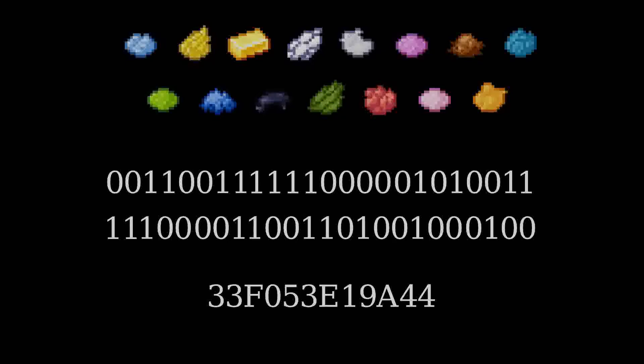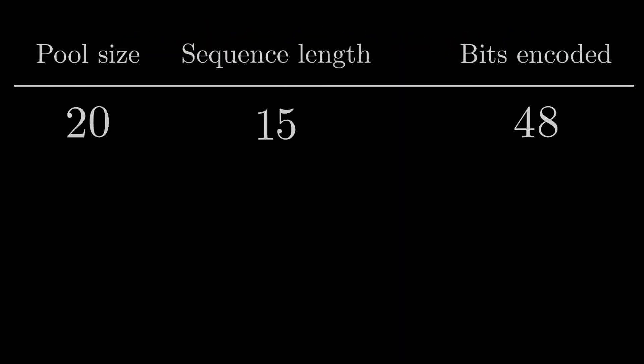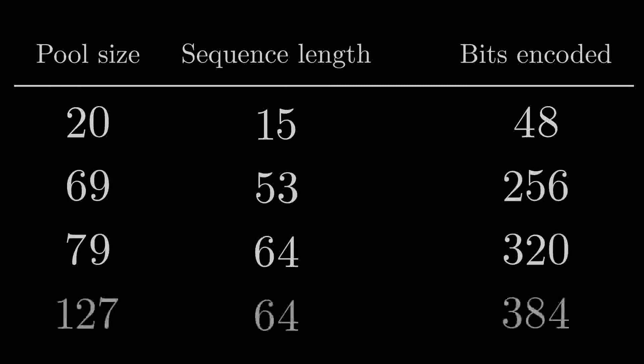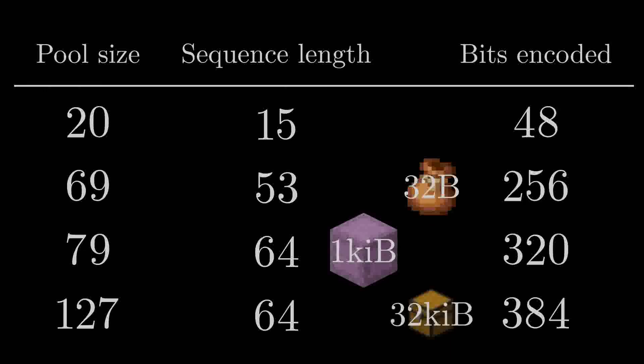This becomes much more powerful the more we scale it up, though. Bundles allow us to do exactly that, as they can hold up to 64 unique items. In fact, they are so good at this that you don't even need to use the whole thing to encode 256 bits. And just a reminder that this is per bundle, which can be put into Shulker boxes.